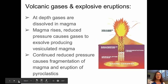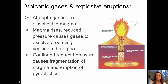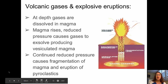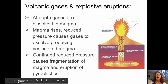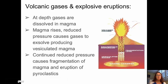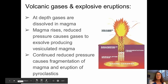Moving on to volcanic gases and explosive volcanic eruptions: the volcanic gases dissolved in magmas are what will eventually propel those magmas up and out of a volcano. As the magma rises, the pressure is reduced, causing those gases to exsolve or come out of solution, producing a vesiculated magma. Vesicles are the holes left behind when gases escape from the magma. Continued reduction in pressure causes fragmentation of the magma and then eruption of pyroclastic material — just like shaking a bottle of soda, where the gas coming out of solution causes it to shoot out of the bottle.